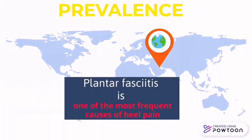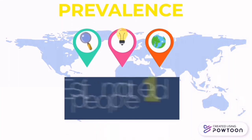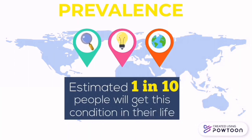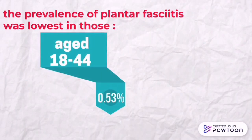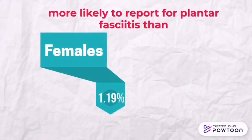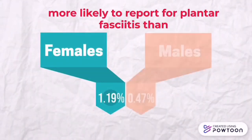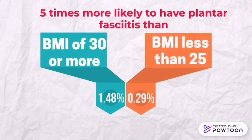Plantar fasciitis is one of the most frequent causes of heel pain. It accounts for 15% of all adult foot complaints requiring professional care and is prevalent in both non-athletic and athletic people. It is estimated that around 1 in 10 people will get plantar fasciitis in their lifetime. The average plantar heel pain episode lasts longer than 6 months and affects up to 10–15% of the population. The prevalence is lowest in those aged 18–44 and highest in those aged 45–64. Females are more likely to report plantar fasciitis than males, and those with a BMI of 30 or more are 5 times more likely to have plantar fasciitis than those with a BMI less than 25.